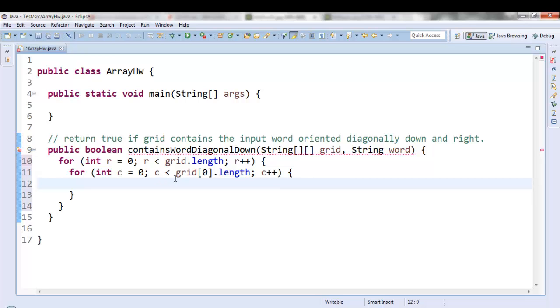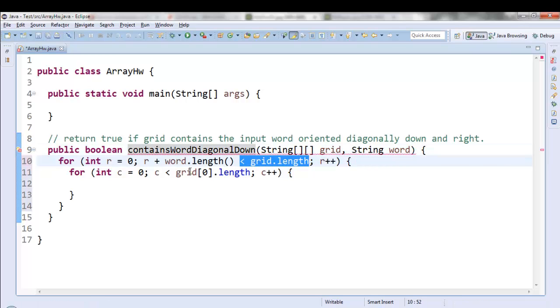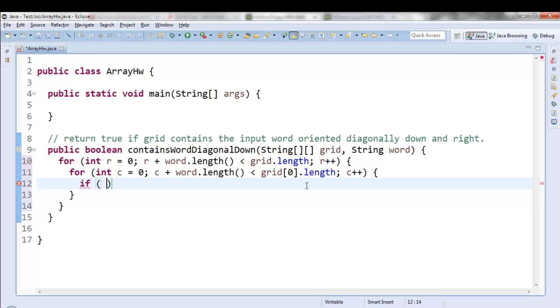So as I was just saying, this is going to search through every element, but I want it to be true that the row plus the word length is less than what's out of bounds, and the column plus the word length is less than what's out of bounds. And now I can say something like, if contains word, if the grid contains the word starting at that row and column, and here's the word, then I can return true because I found it. Otherwise, if I get through all of that looping and I've never found it, I can return false at the end.